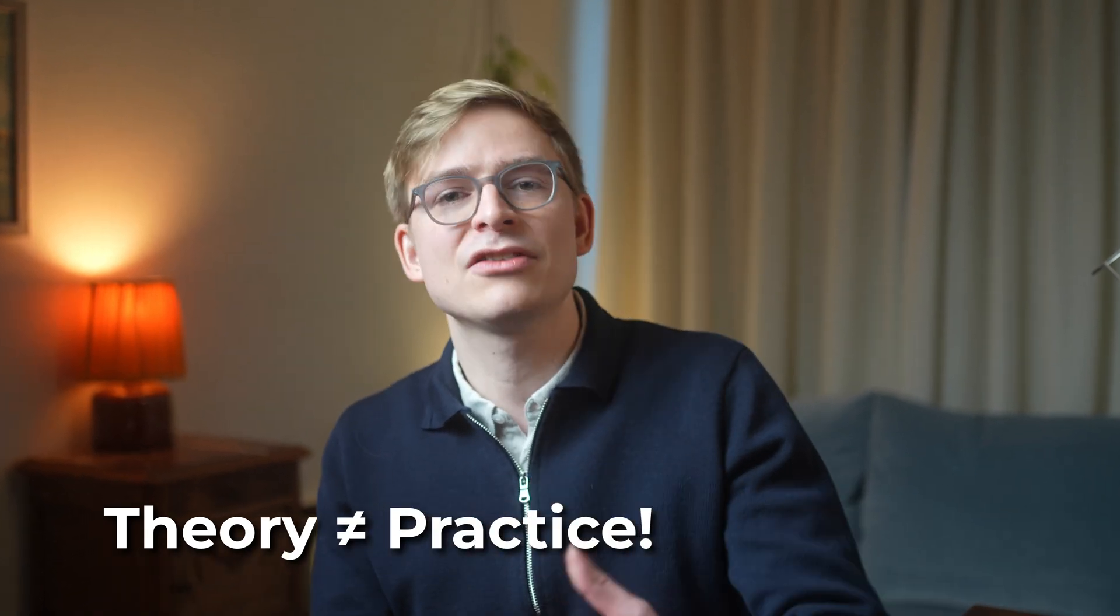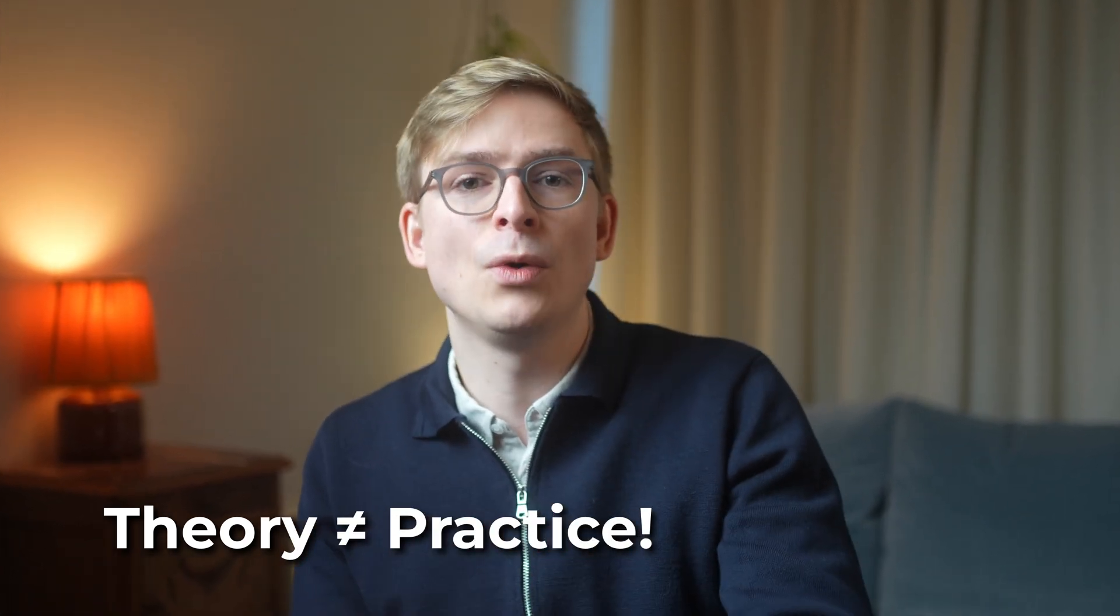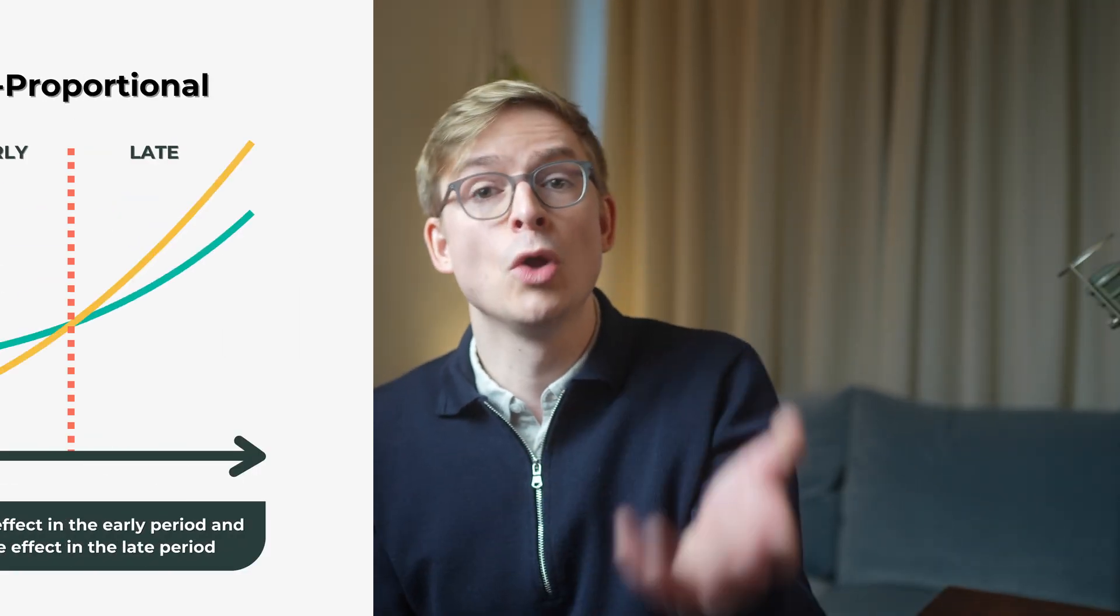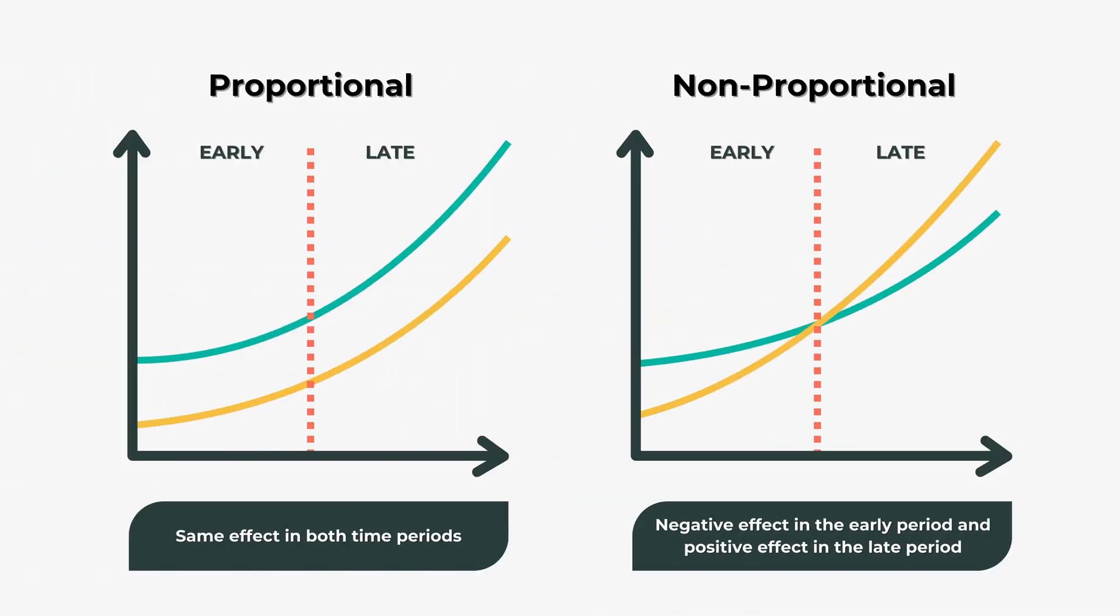In practice, we may of course still see cases where the hazard ratio is 1, even though the Kaplan-Meier curves don't overlap perfectly. This can be attributed to non-proportional hazards, which means that the hazard ratio between the two groups does not remain constant over time.